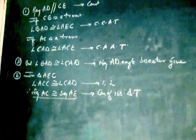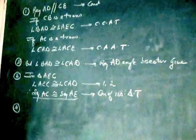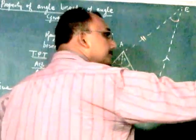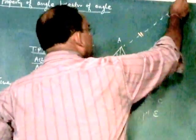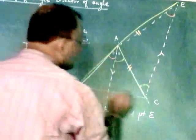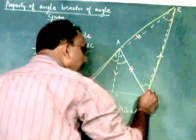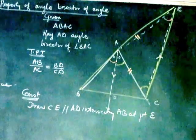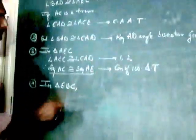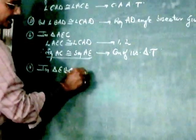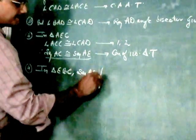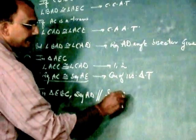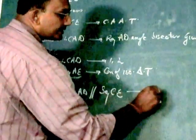Point number 4: So let's concentrate on triangle EBC. In triangle EBC we can write segment AD is parallel to segment CE. This was our construction.